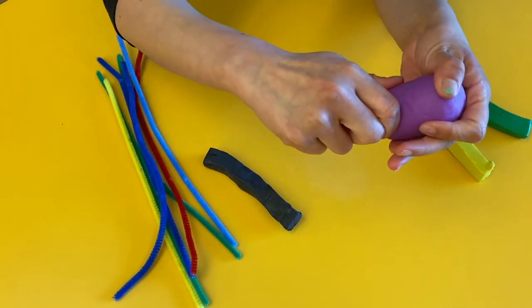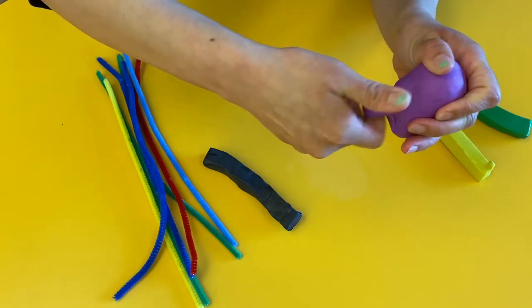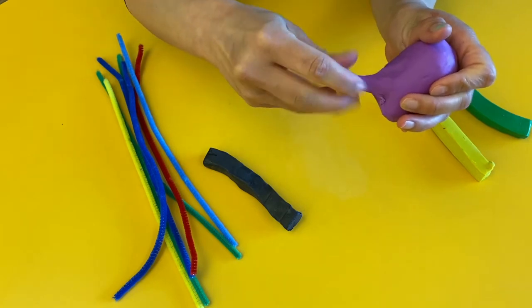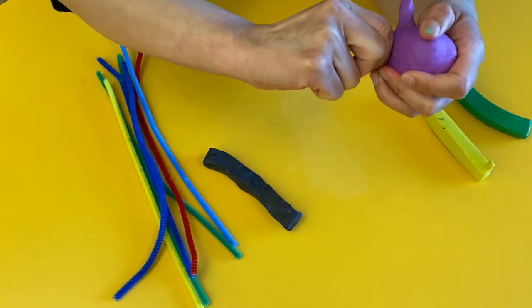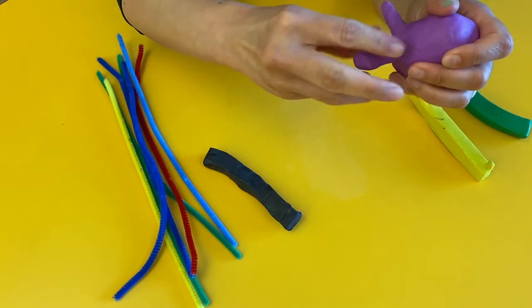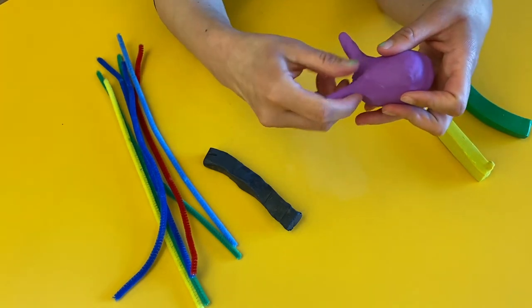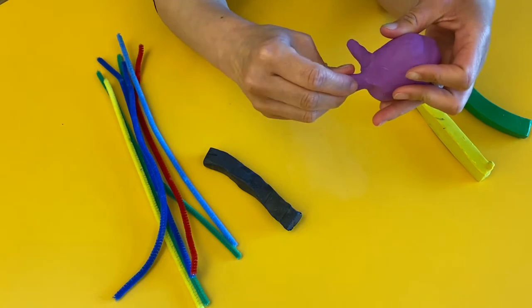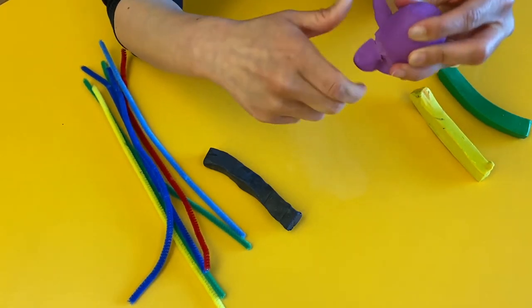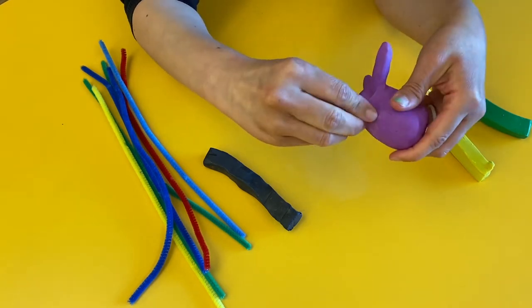To make the tentacles I'm just gonna pinch out some clay like this and just smooth it out with my fingers. Just do it all around. So you can use this technique if you're making animal creatures and you're making legs or a tail just pinch out the clay like this and smooth it out with your fingers. It's very easy to do.